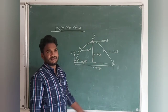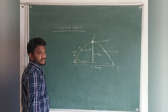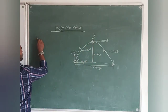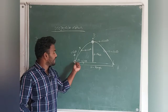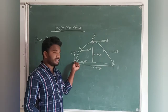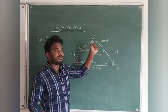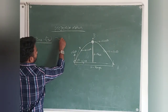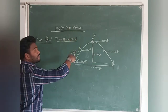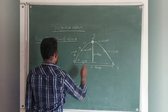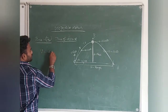Before finding maximum height, we should know the time of ascent. The time taken for the body to reach from the ground level to the maximum height is called the time of ascent. To find that, we directly use the first law of kinematics: v = u + at.